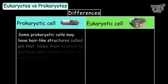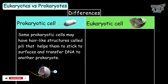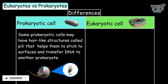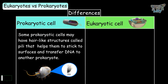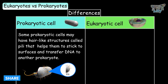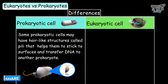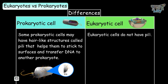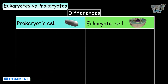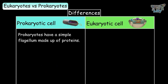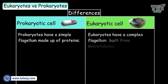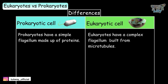Some prokaryotic cells may have hair-like structures called pili that help them to stick to surfaces and transfer DNA to other prokaryotes, whereas eukaryotic cells do not have pili. Prokaryotes have a simple flagella made up of proteins, whereas eukaryotes have a complex flagellum built from microtubules.